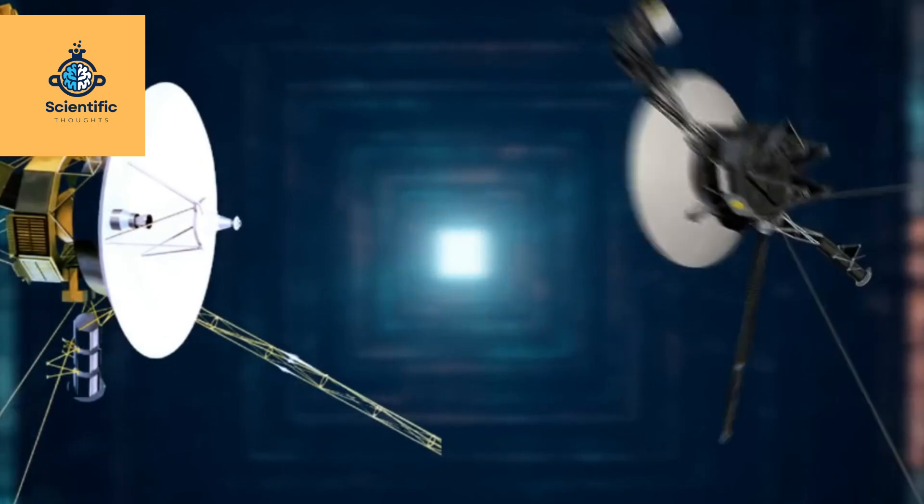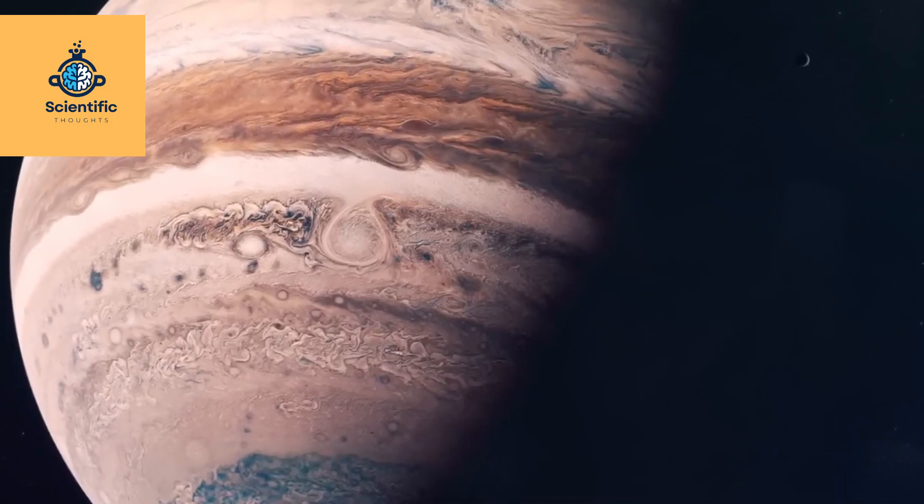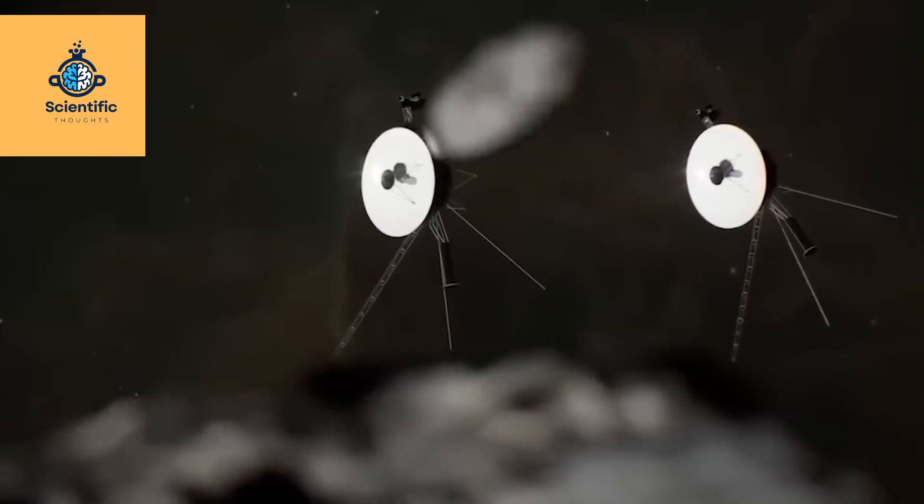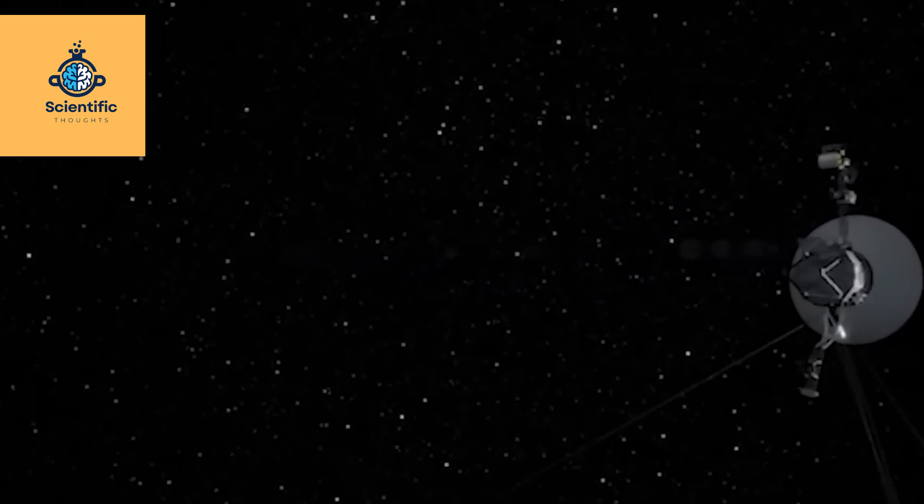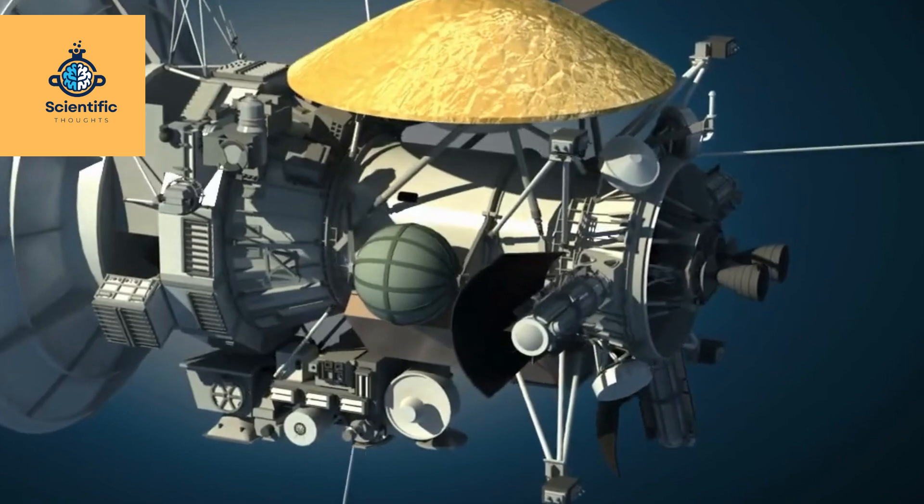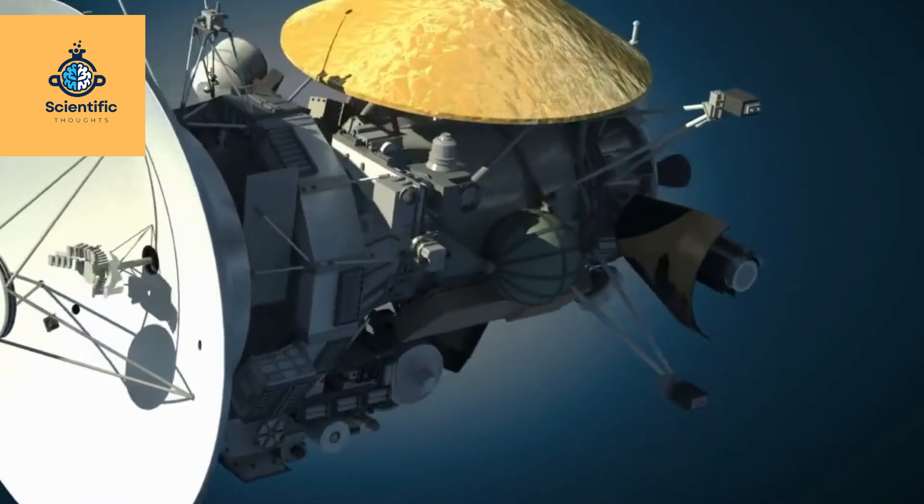Triton's secrets: in 1989, Voyager 2 provided a close-up view of Triton, Neptune's moon. Despite its icy surface, Triton is geologically active, with volcanoes, geysers, and ridges sculpting its landscape. The moon's diverse terrain hints at the complex interplay between its icy surface and internal heat.